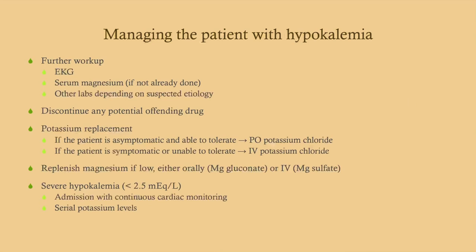To manage these patients: get an EKG, serum magnesium, and other labs depending on suspected etiology. Discontinue any offending drug such as a diuretic. If asymptomatic and able to tolerate orally, give oral potassium chloride. If symptomatic or unable to tolerate — for example, vomiting — give IV potassium carefully. Replenish magnesium if low, either orally or IV. For severe hypokalemia, admit the patient, place on continuous cardiac monitoring due to arrhythmia risk, and obtain serial potassium levels to monitor treatment response.